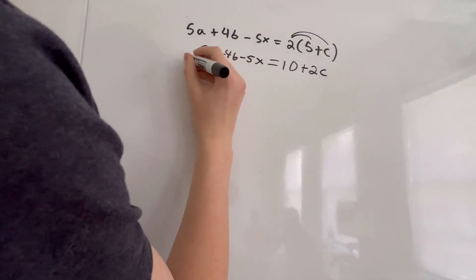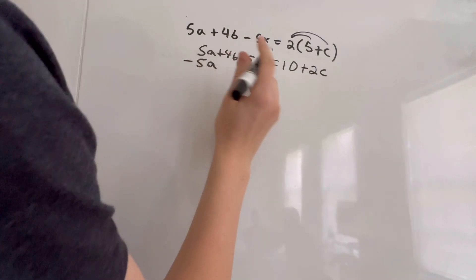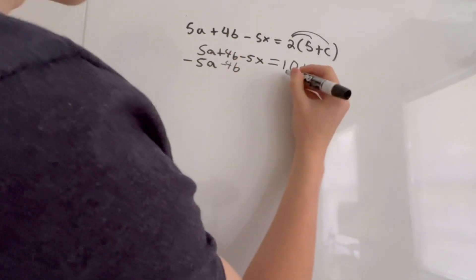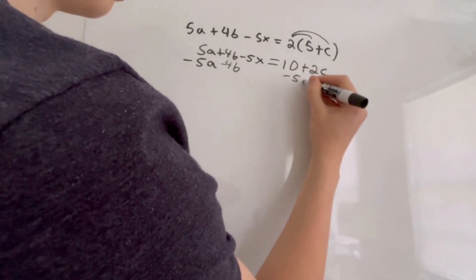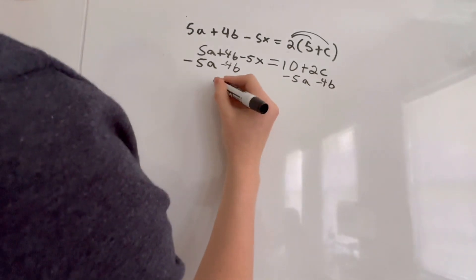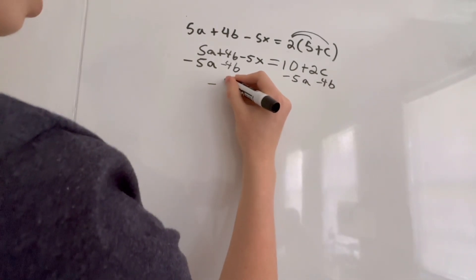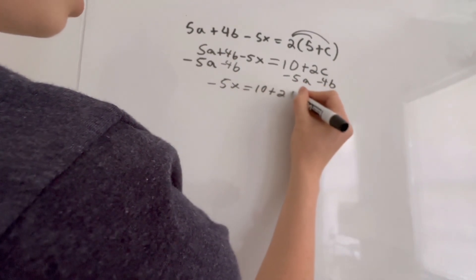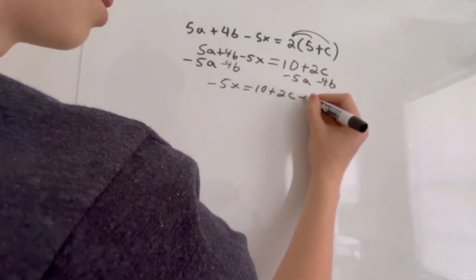Now, to isolate X, we have to subtract 5A, and we also have to subtract 4B. So we have to do that to both sides, minus 5A minus 4B. Now, we are left with negative 5X equals 10 plus 2C. And then we have to subtract these two.